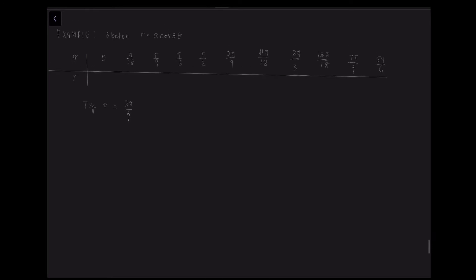So let's look at an example. In the exam, it asks you to sketch r equals a cos 3 theta. We plug in test values for theta into the equation and get specific r values. Once we have recorded them by plugging them into the calculator, we have a series of r values. Also remember that theta rotates in an anti-clockwise direction.